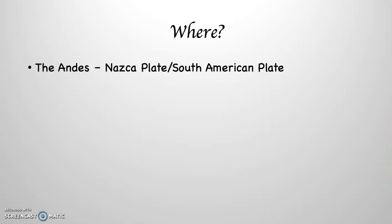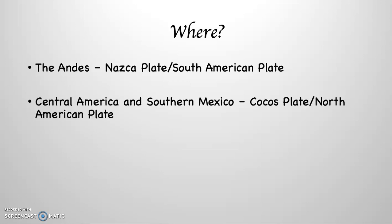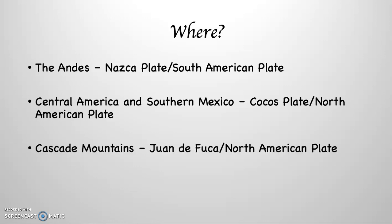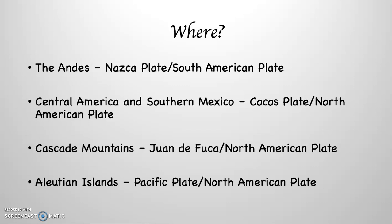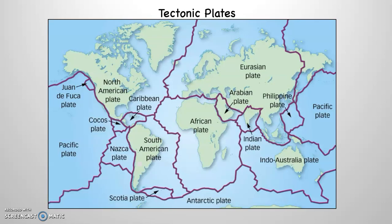Where does this happen? This is what creates the Andes Mountains in South America, where the Nazca Plate, an oceanic plate, subducts under the South American Plate, a continental plate. In Central America and Southern Mexico, the Cocos Plate, an oceanic plate, subducts under the North American Plate. In the Cascade Mountains, which run from California through Oregon and Washington, the Juan de Fuca Plate, an oceanic plate, subducts under North America. And where the Aleutian Islands are, hanging off the side of Alaska, the Pacific Plate subducts underneath the North American Plate.